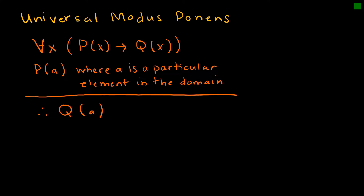Our very favorite rule that we use so often is modus ponens — here as universal modus ponens. For all X, if we know that P(X) implies Q(X), and we know that P(A) is true, therefore we know Q(A) is true. Whenever we have that if-then statement and we can show that the first part is true, we can show that the second part is true.